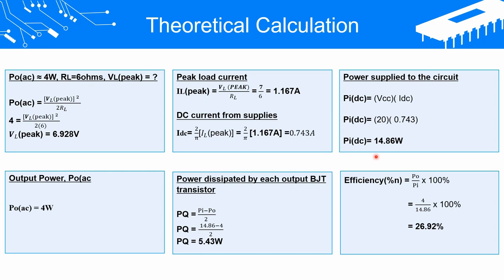The output power is 4 watts. Next, the power dissipated by each BJT transistor is calculated using the formula with input power and output power substituted, giving 5.43 watts. Lastly, efficiency equals output power divided by input power multiplied by 100, giving an efficiency of 26.92%.